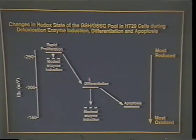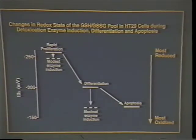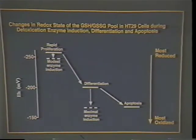If cells are growth arrested - if you remove growth factors and they stop dividing, or if you look at differentiated cells in vivo - they tend to have a redox potential of minus 220 to minus 190 millivolts, independent of the actual concentration of GSH and GSSG. If you induce cells to undergo apoptosis, whether proliferating or differentiated, whether receptor-mediated, toxicologic, or mitochondrial apoptosis, they come to a redox potential of minus 180 to minus 150 millivolts. If you go more oxidized than minus 150, cells die by necrosis.